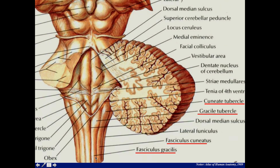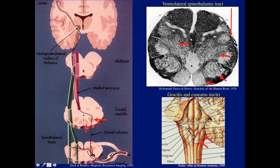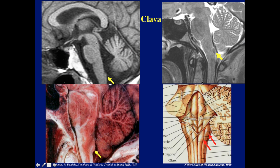The fasciculus cuneatus is on the posterior aspect of the cord and the more medial fasciculus gracilis. They end up in the cuneate tubercle and the gracile tubercle in the medulla. We can actually see them histologically. There's a little bump on the sagittal MR midline image — on T2 and FLAIR — and on anatomic specimen it's called the clava. The clava is formed by the gracile and cuneate tubercles.